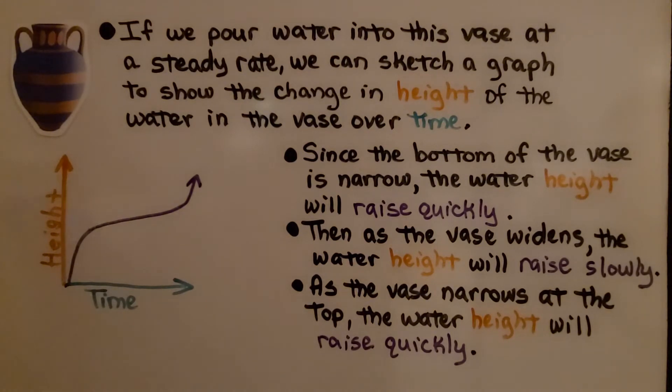Since the bottom of the vase is narrow, the water height will raise quickly. Then as the vase widens, the water height will raise slowly—it's got more width to fill. As the vase narrows at the top, the water height will raise quickly again. Our graph would show it rising quickly, then slowing down, then rising quickly again.